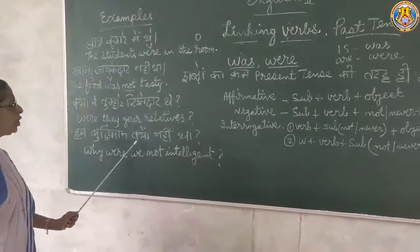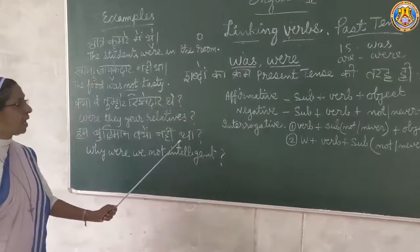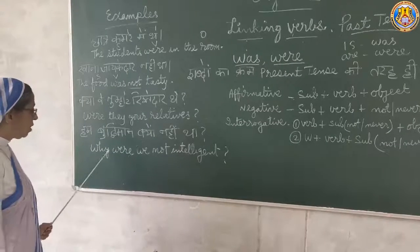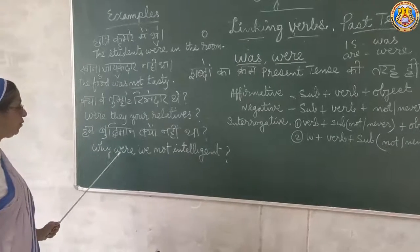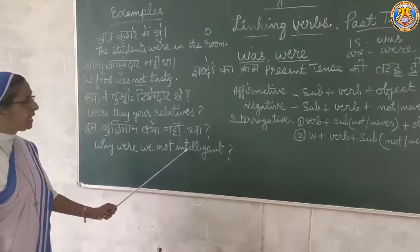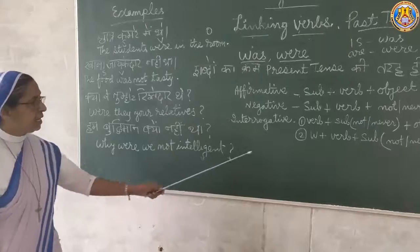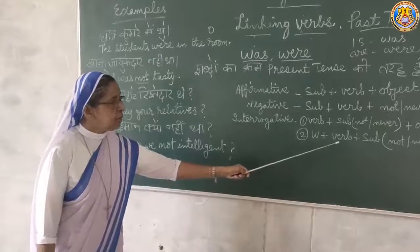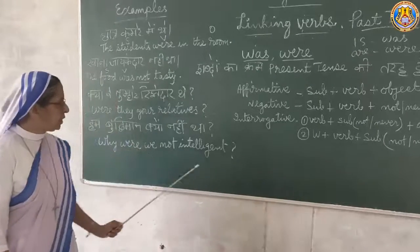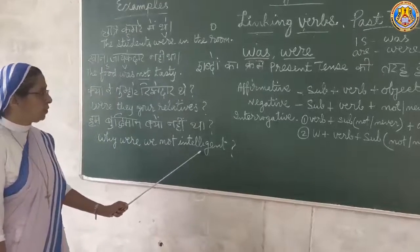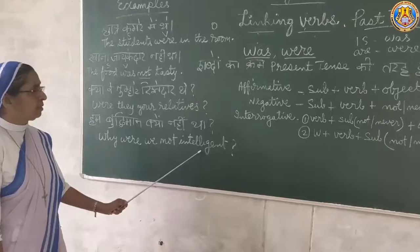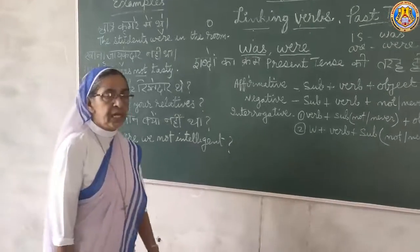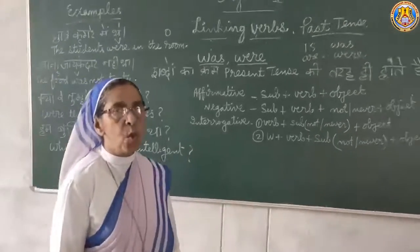Why were we not intelligent? The structure is WH-word plus Verb plus Subject plus Not or Never plus Object. Okay. Now we will do some homework.